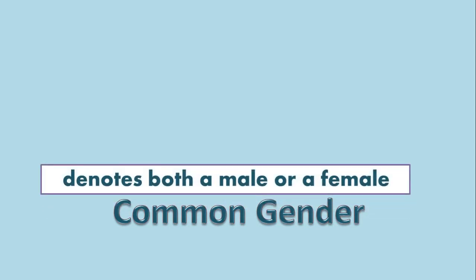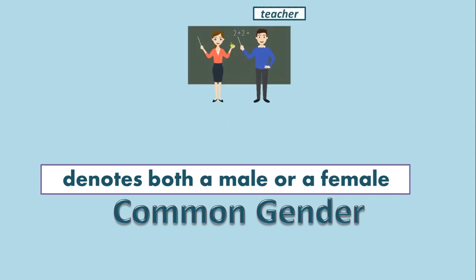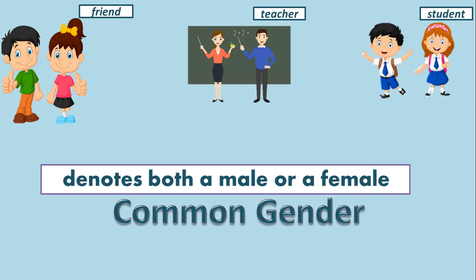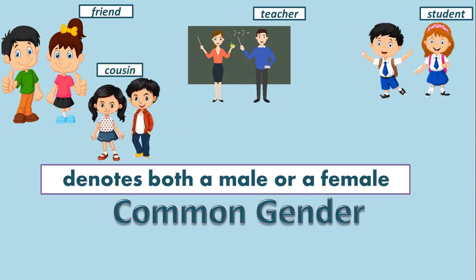Next is common gender. Common gender denotes both male or female — you cannot make out whether the gender is male or female. A noun that may be used for both males and females is said to be common gender. For example: teacher could be male or female; friend could be a girl or a boy; student can be a boy or a girl; cousin could be male or female; and doctor can be male or female.